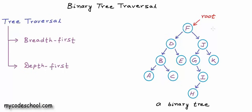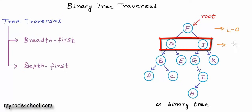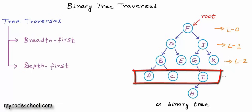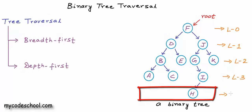In this binary tree, the node with value F, which is the root node, is at level 0. Depth of a node is defined as the number of edges in the path from root to that node. A root node would have depth 0. The two nodes D and J are at depth 1, so we can say they are at level 1. These four nodes are at level 2, these three nodes are at level 3, and finally the node with value H is at level 4.